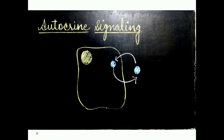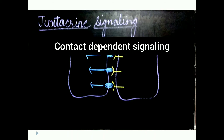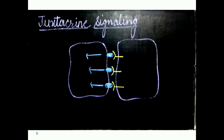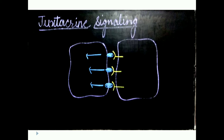Another type of signaling is juxtacrine signaling, also called contact-dependent signaling, because here a direct contact must be established between the signaling cell and the target cell. That contact can be through the extracellular matrix or through conduits, as in notch signaling. Examples include notch signaling and the interaction between T-lymphocytes and antigens.